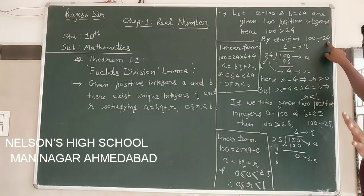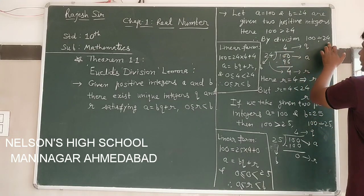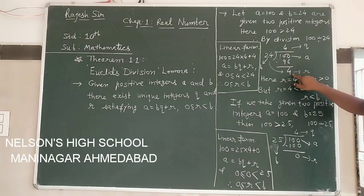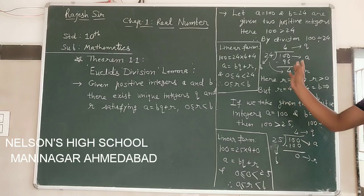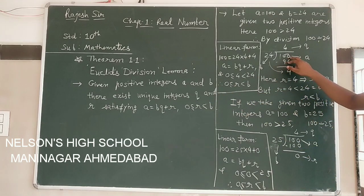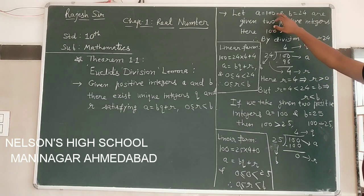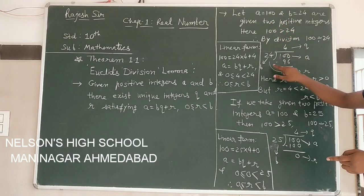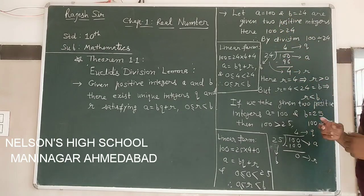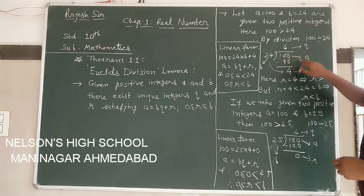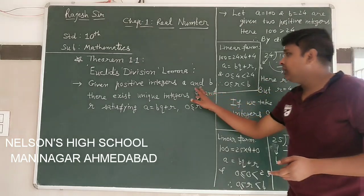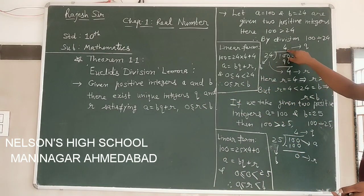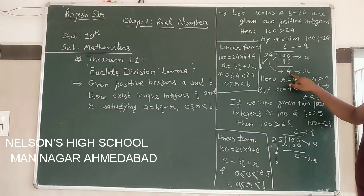As we know, in 100 divided by 24 — 100 will be divided by 24. If we divide 100 by 24: 24 fours are 96, and 100 minus 96 gives 4. Now we assign these numbers: the dividend 100 is denoted by a, the divisor 24 is denoted by b. By dividing, we get two more integers — the quotient 4 and the remainder 4. So q means quotient, which is 4 in this example, and r is remainder, which is also 4 in this example.